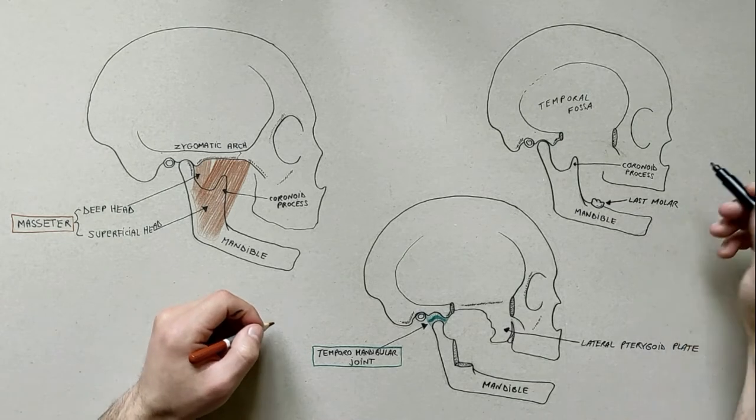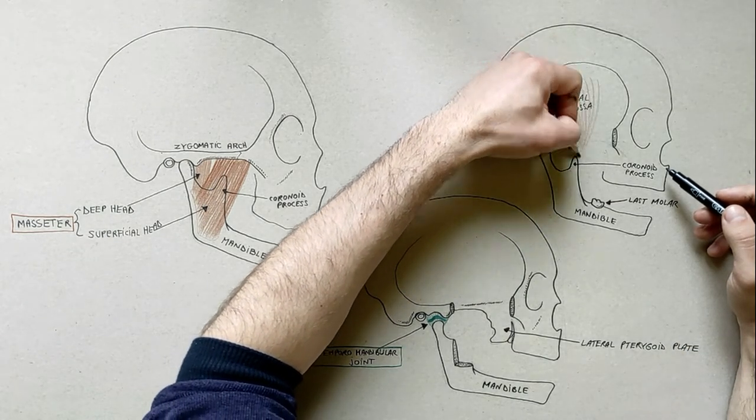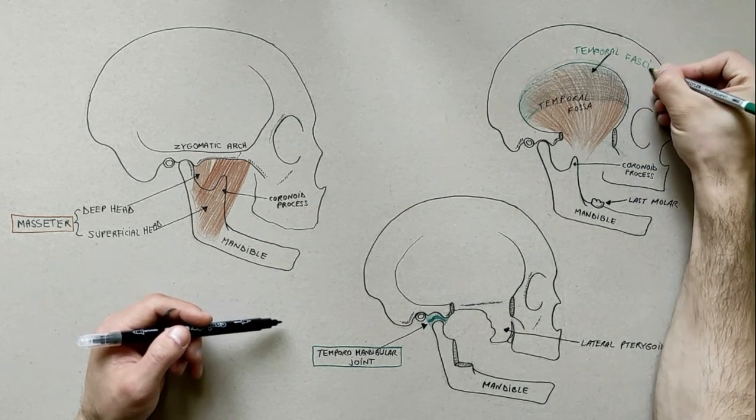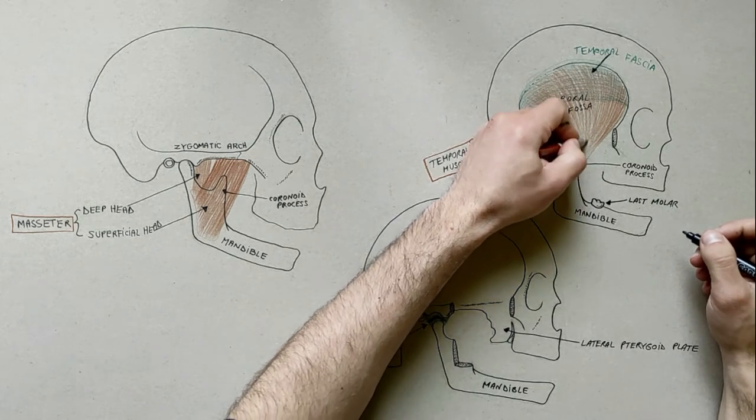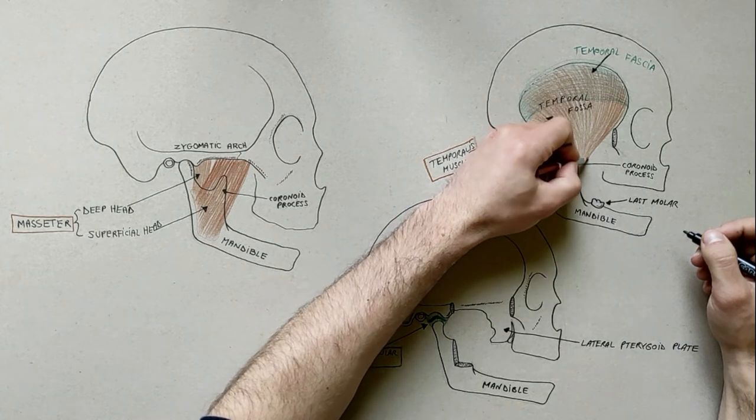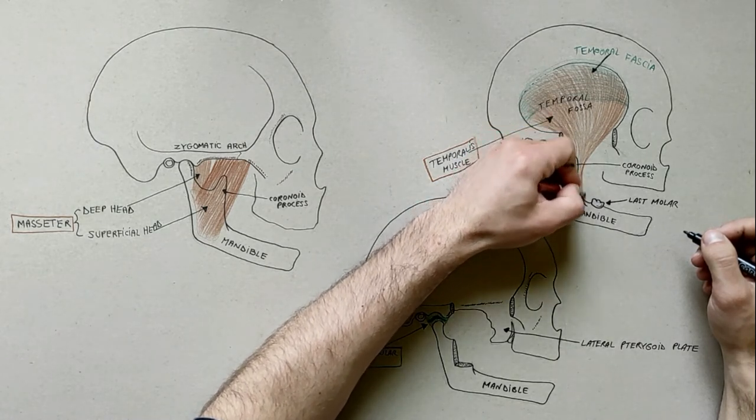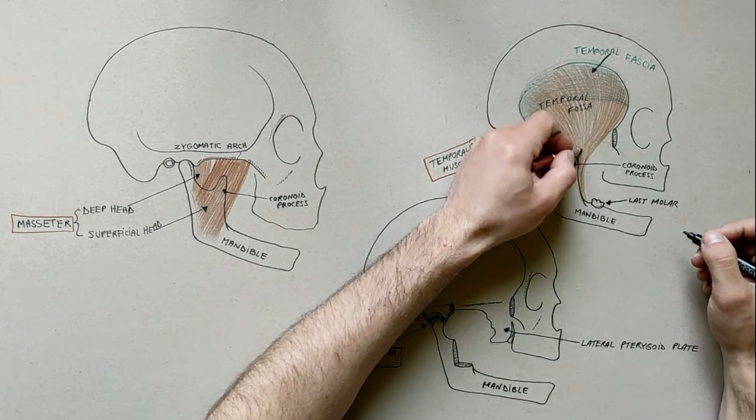On the next diagram we will draw the temporalis muscle, which arises from the temporal fossa and the deep part of temporal fascia, which covers this muscle. It passes medial to the zygomatic arch and forms a tendon which inserts onto the coronoid process of the mandible, with its insertion extending into the retromolar fossa, posterior to the last mandibular molar.